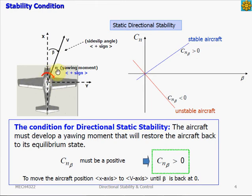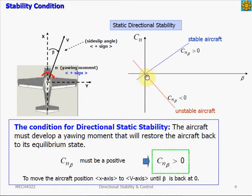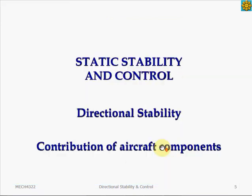If we plot the yawing moment coefficient Cn versus the side slip angle beta, we want the slope Cnβ to be positive for static directional stability. Notice that the trim condition where Cn equals zero is fixed at beta equals zero. So the condition for directional static stability is Cnβ greater than zero. Now let's look at the contribution of different aircraft components towards directional stability.